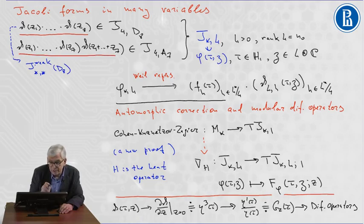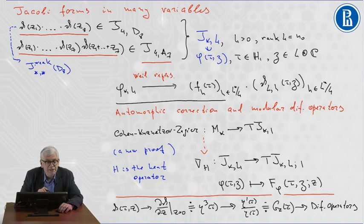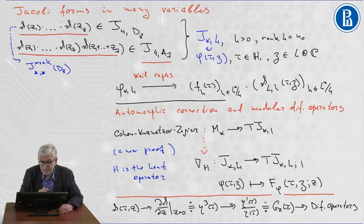In the same way, we can construct the Jacobi form of so-called critical weight for the lattice A7.